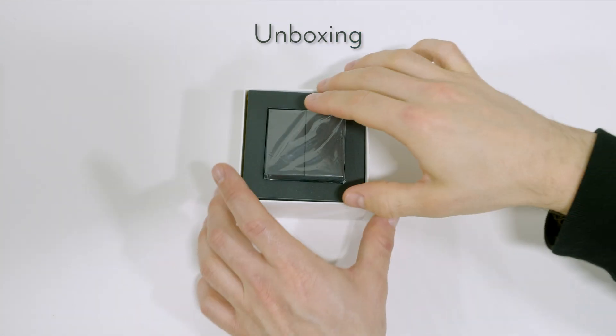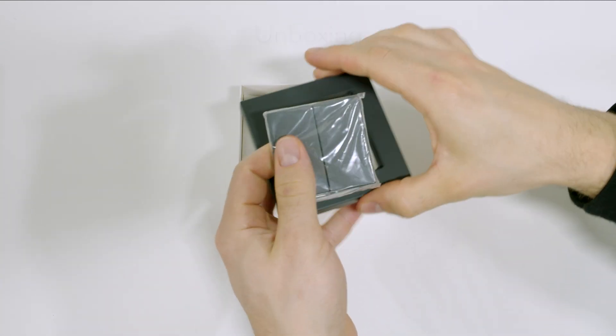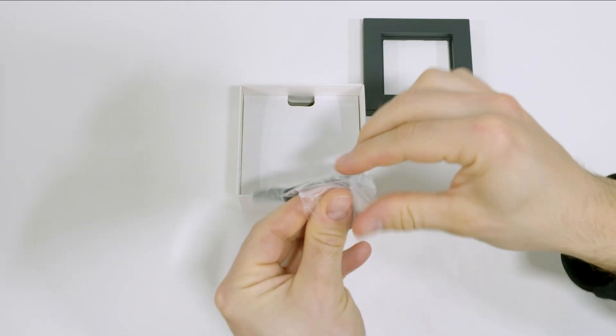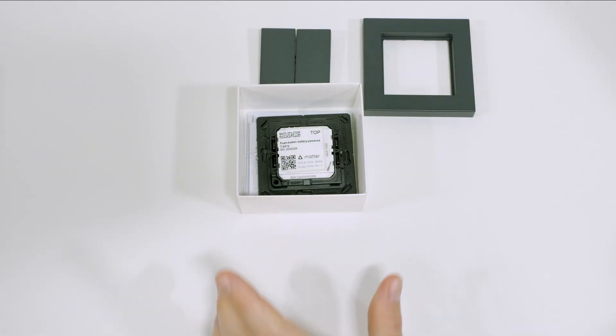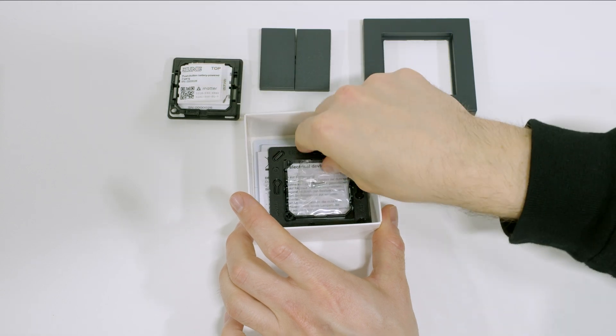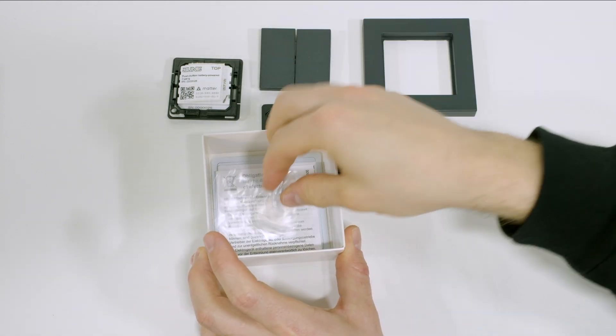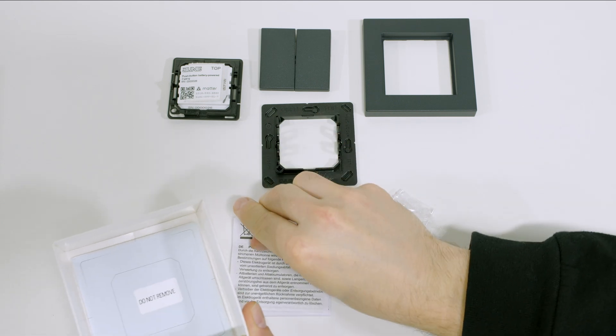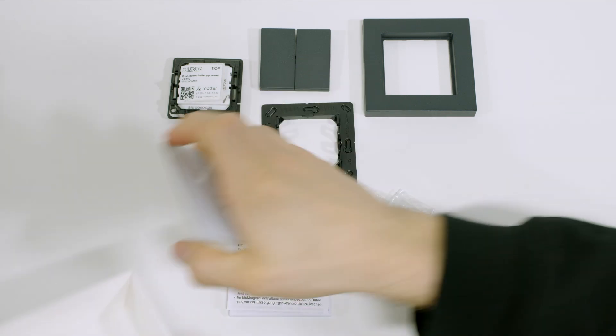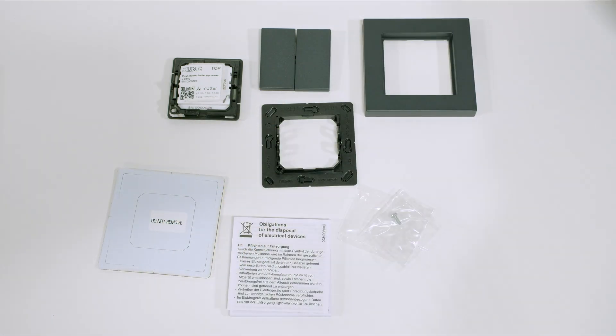Included in the packaging are a frame, one set of buttons, a radio module in a mounting ring, one base plate, a screw to secure the radio module, for example in public buildings, the operating instructions and an adhesive pad.